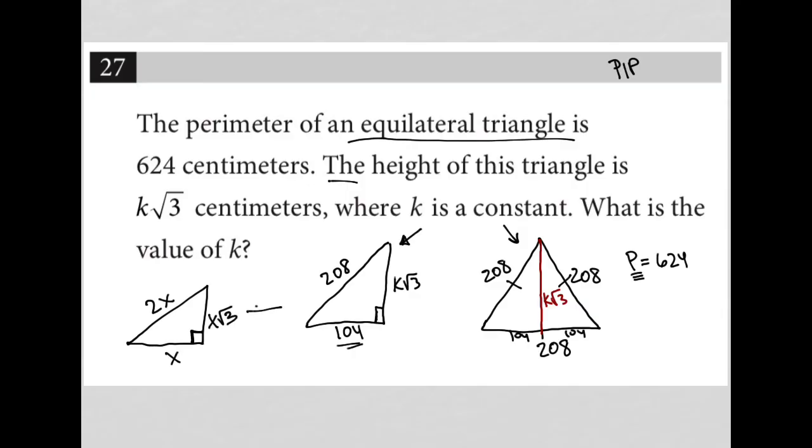And that's exactly what we have here. We have a leg that's 104. The hypotenuse is 2 times 104, which is 208. And then we have this longer leg here that's k root 3. Well, k root 3 corresponds to my x root 3.